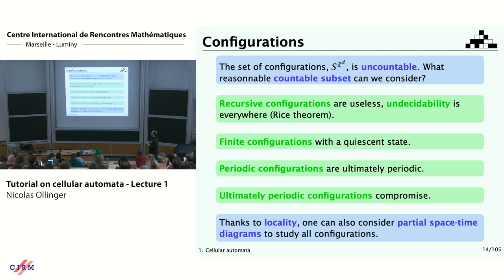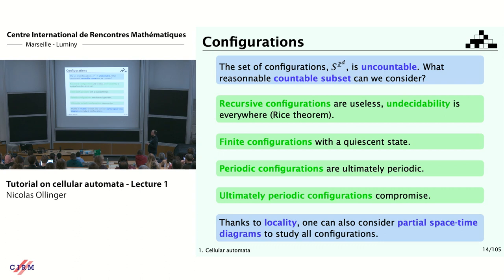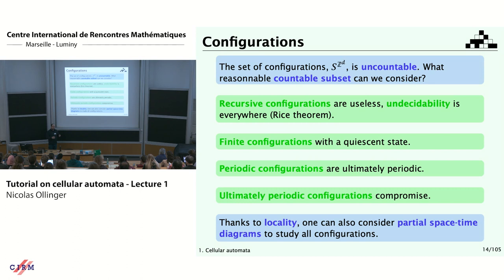So you could turn to finite configurations. You have one state which is quiescent — when you just see that state, you stay in that state. It's the white state from the Game of Life: the all-white configuration stays all-white. You then put the finite pattern in the middle, and the finite patterns have a finite pattern as their image since we have local rules. You could also take periodic configurations — they're nice for simulation, since cells on the border can use positions modulo the size. But periodic configurations keep all the symmetries, so orbits will all be finite.